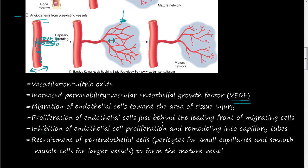You also have to recruit the peri-endothelial cells. These peri-endothelial cells are pericytes for small capillaries and smooth muscle cells for larger capillaries. These smooth muscle cells wrap around the endothelial cells and cause contraction and vasodilation of the blood vessel. The endothelial cells can contract on their own, but having a layer of smooth muscle around them is more efficient. Pericytes serve a similar role for capillaries, and this recruitment turns the new sprout into a mature blood vessel.